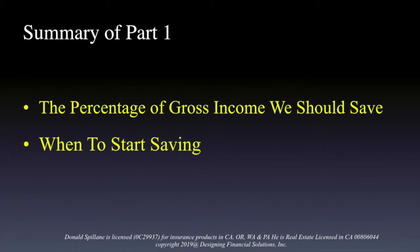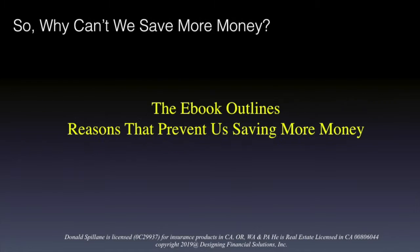The e-book starts with a summary of part one — the percentage of gross income we should save and when to start saving. Then we'll look at why we can't save more money and outline the reasons that prevent us from doing so.